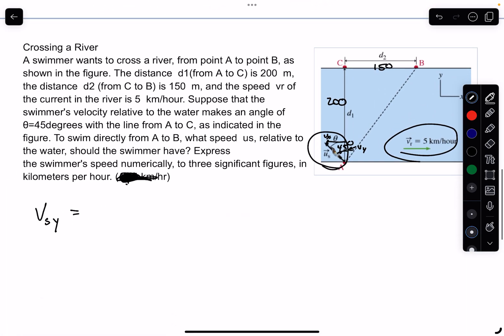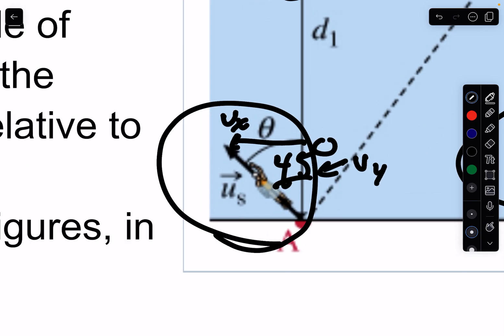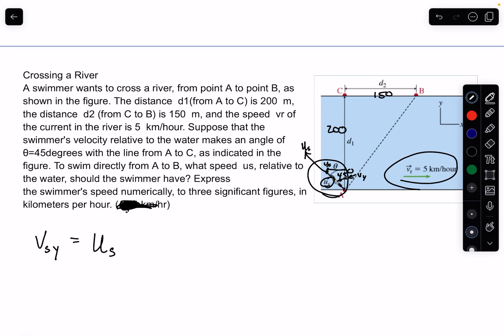The V of the swimmer in the Y direction is going to be the U of the swimmer, the speed of the swimmer. That's going to be at the hypotenuse. This is Us right here, times cos 45.